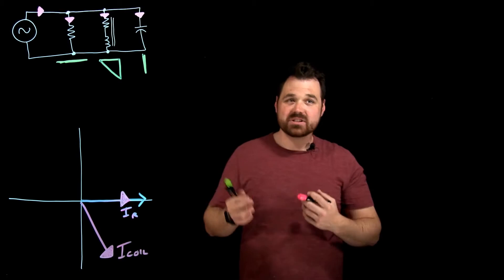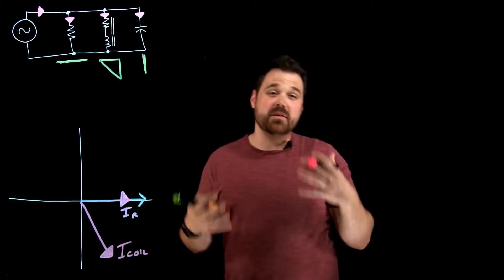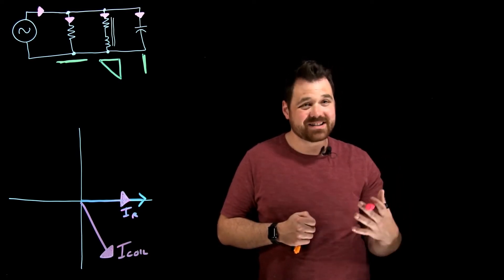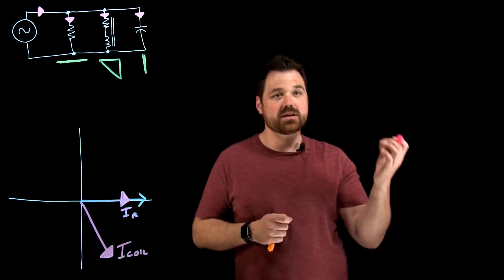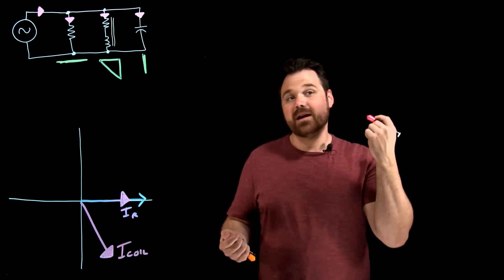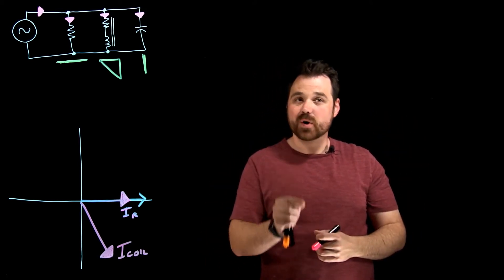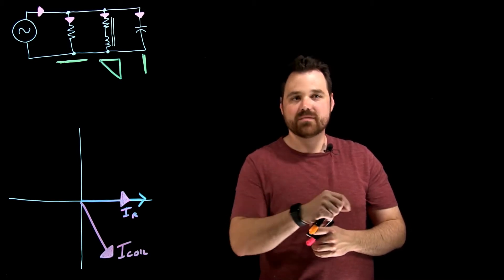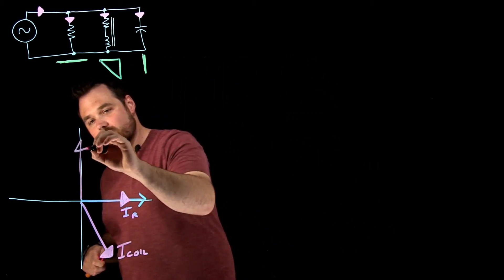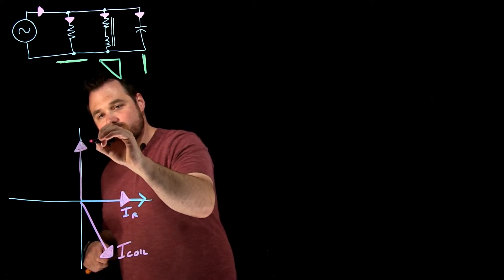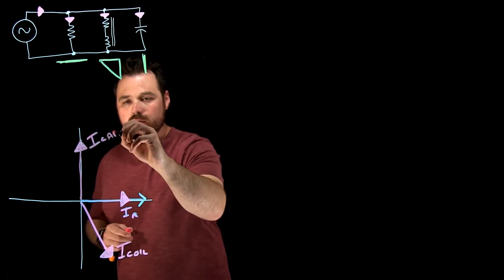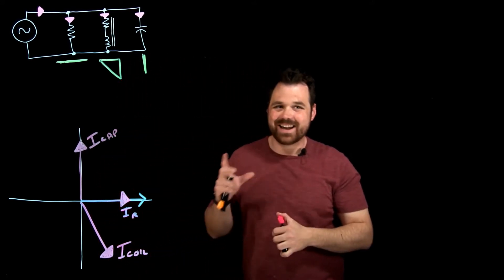Now, the capacitor, in most cases, we deal with capacitors as a pure capacitor. And because capacitors have capacitance, which opposes a change in voltage, my voltage lags my current, or we say current leads voltage in a capacitor. And that's by 90 degrees. So our current for our cap would be up there at exactly 90 degrees.